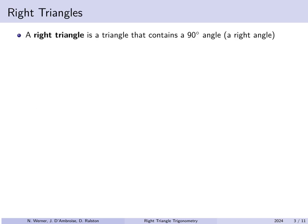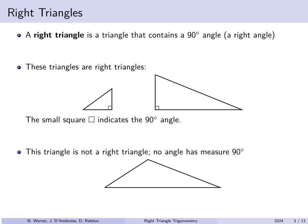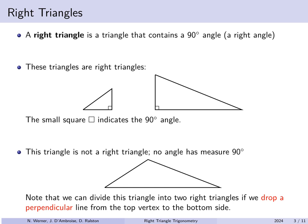A right triangle is a triangle that contains a 90-degree angle, also known as a right angle. That little square in one corner indicates the 90-degree angle. A triangle with no angles marked as 90 degrees is not a right triangle. However, we can divide it into two right triangles by dropping a line perpendicular to the base from the top vertex, giving a right angle on both the left and right sides.